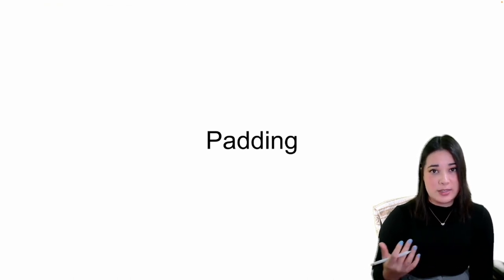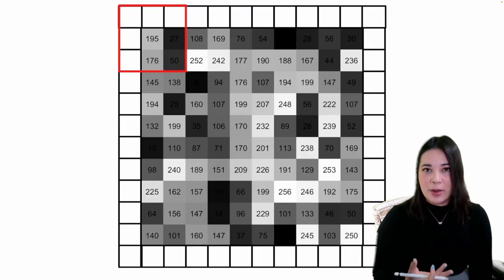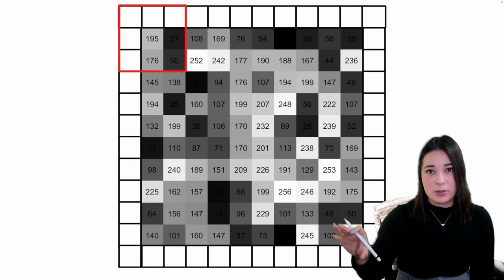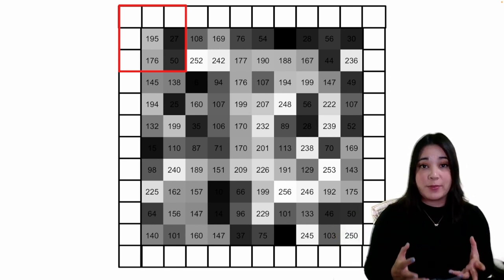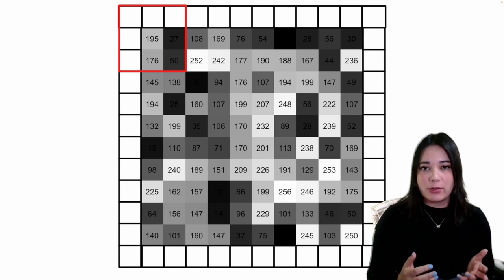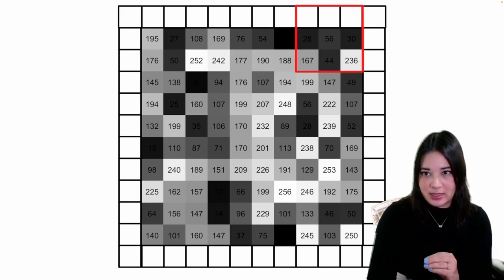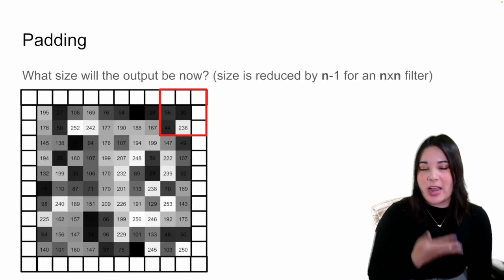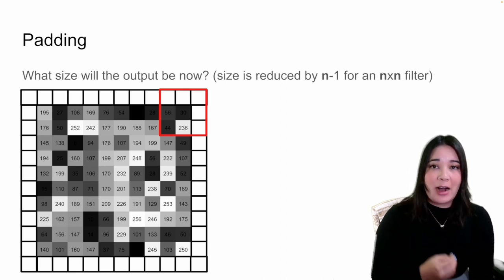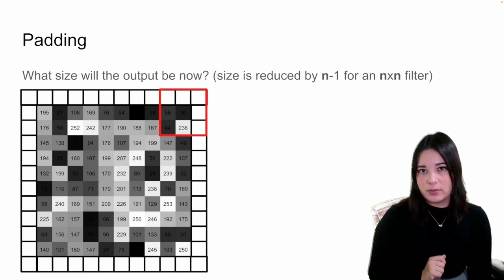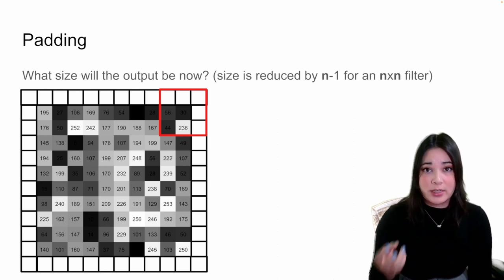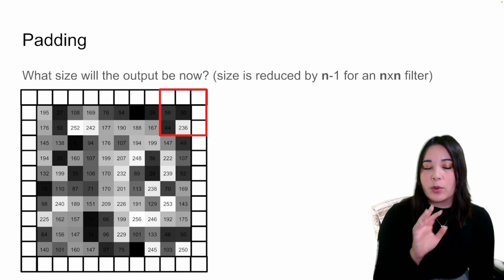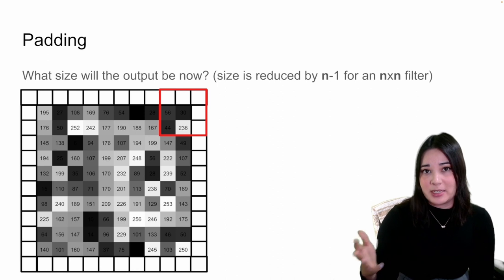If we have a three by three filter, there are only eight ways it can land horizontally, because the filter can't land on values outside our image. This ends up being the same for the vertical direction, so even though our input was 10×10, our output was 8×8. But what if we don't want our output to be a different size? Then we can use padding — we add extra pixels beyond the edge of our image so that our filter can land in enough places that the output has the same dimensions as the input. For a three by three filter, a one-pixel border allows the filter to land in 10 places, making input and output the same size.